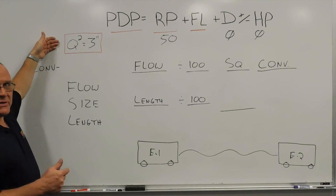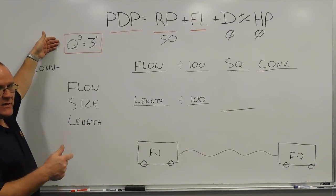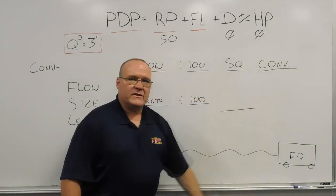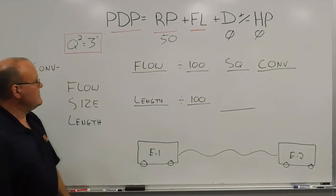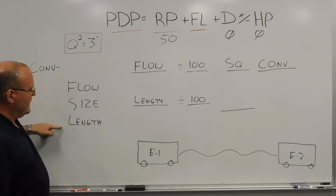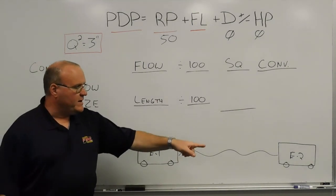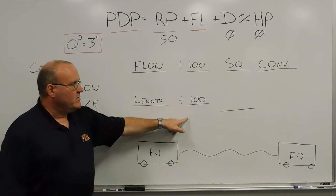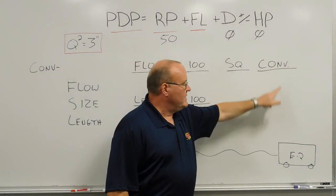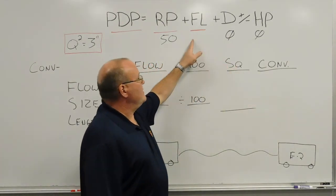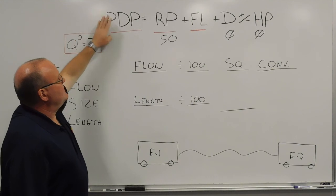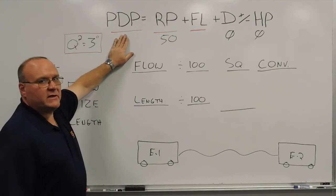When we go from 3-inch hose to any other hose size, we have to apply a conversion factor to get the friction loss for that hose size. For the length, we take the length in feet, divide by 100, and multiply the friction loss per 100 feet times the length to get our total friction loss. As you can see, we've got our formula set up here — we're calculating the pump discharge pressure in a relay setting.